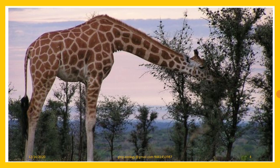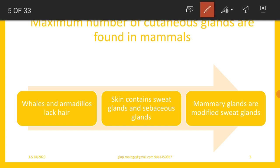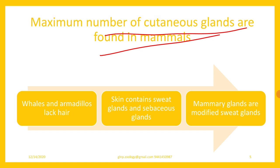The longest mammal is the giraffe. Maximum number of cutaneous glands are found in mammals — in the entire animal kingdom, maximum number of cutaneous glands are found only in mammals. There are various types of glands like sebaceous glands, sweat glands, mammary glands, ceruminous glands, lacrimal glands, and Harderian glands.